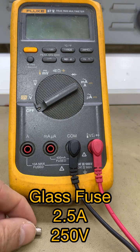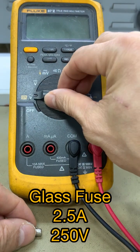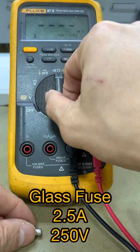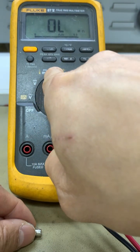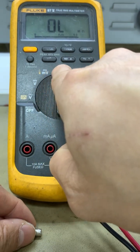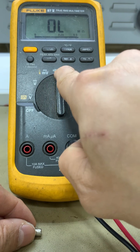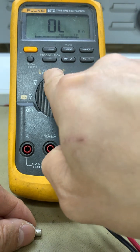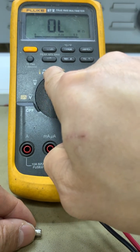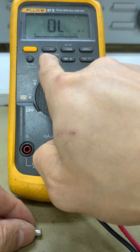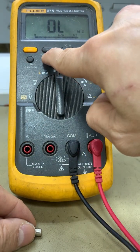First, let's set our multimeter here to continuity resistance and capacitance mode. In order to test the continuity, let's press this button to test the fuse.